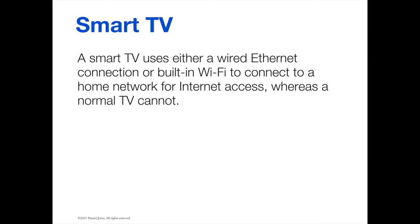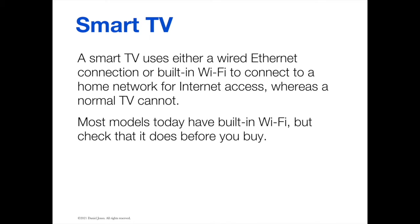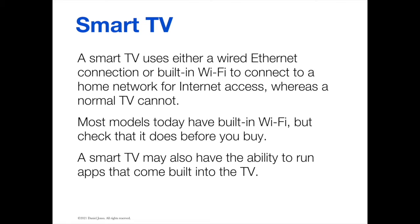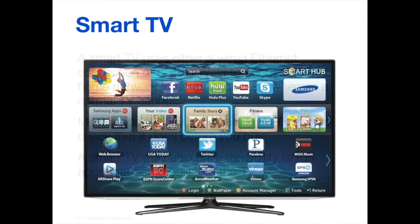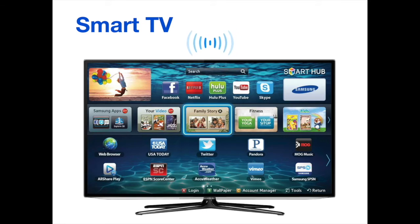Smart TVs many times have apps built into them. But what is a smart TV? A smart TV uses either a wired Ethernet connection, or built-in Wi-Fi, to connect directly to the internet in your home, whereas a normal TV cannot do that. Most models today have built-in Wi-Fi, but before you purchase a smart TV, you want to check. Smart TVs may also have the ability to run apps that come built-in with the TV — popular ones like Netflix, YouTube, Hulu, and Amazon Prime. If you don't have a particular app on your TV, you can always search and download more apps on your TV.